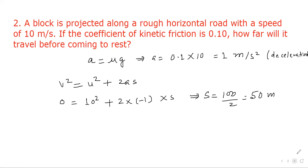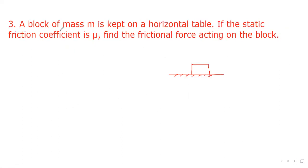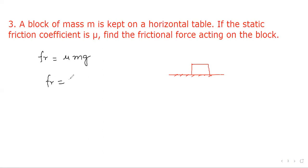Next question: a block of mass m is kept on a horizontal table. If the static friction coefficient is μ, find the frictional force acting on the block. Since the body is resting on the table with no applied horizontal force, there is no friction. The frictional force will be zero.